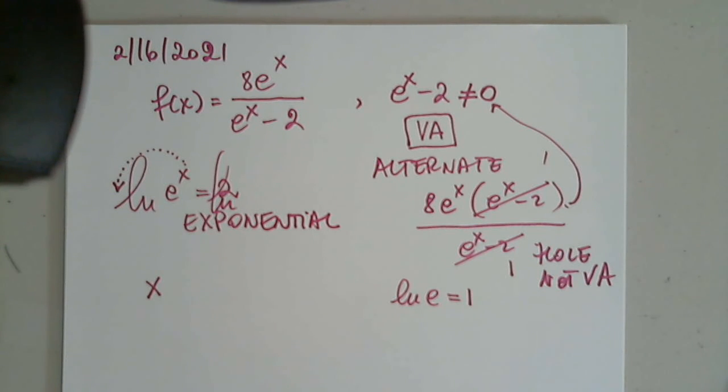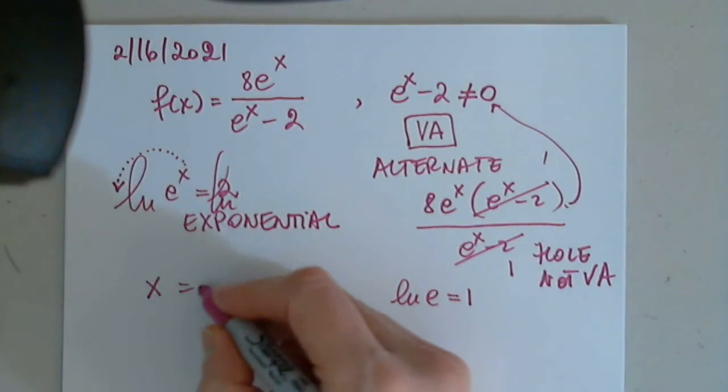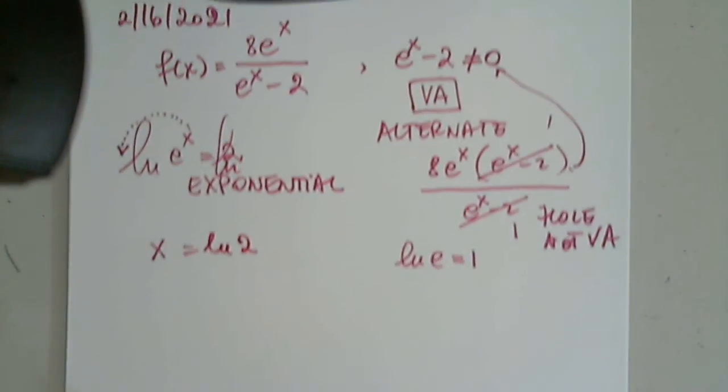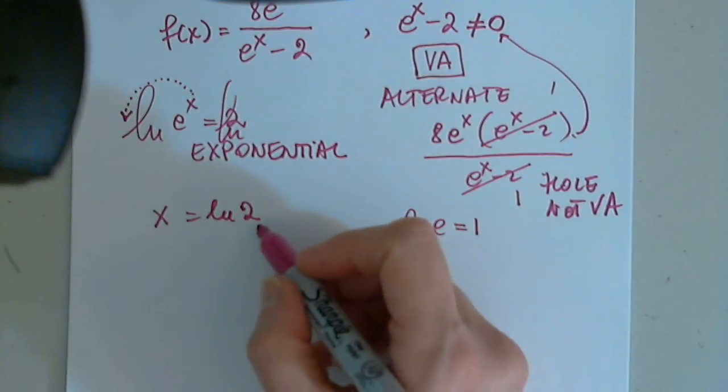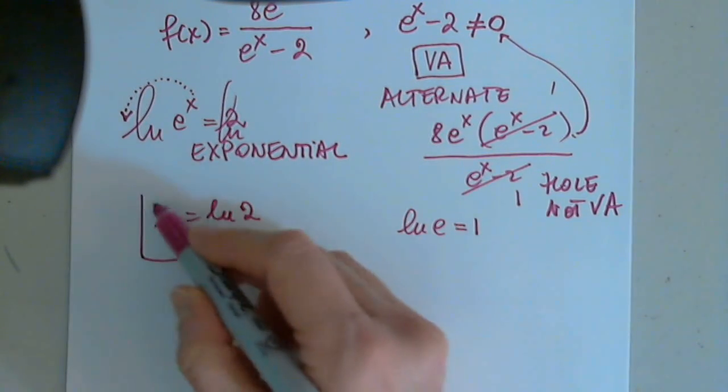Back to our situation here. So then x equals natural log 2. So x equals natural log 2 is a vertical asymptote for this function.